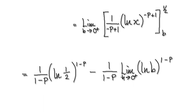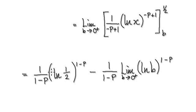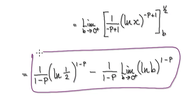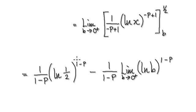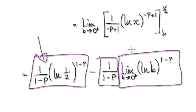So when you integrate this it gives you this result. Now put a half in there — put your half into here — that gives you this. Then put your b in — that gives you this. So overall it will equal this. This part here is going to be a definite number — it's a constant. So now it really boils down to evaluating whether this is going to converge or diverge.